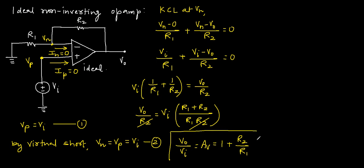This is the closed-loop voltage gain of the non-inverting operational amplifier. This closed-loop voltage gain is positive because it is the gain of a non-inverting op-amp, and the positive closed-loop voltage gain indicates that the output voltage is in phase with the input voltage.